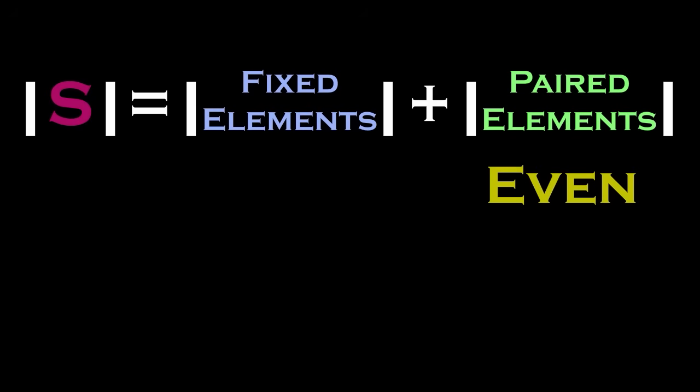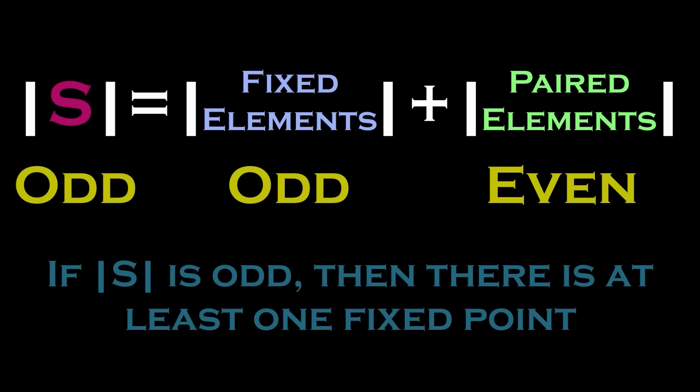Likewise, if the number of elements of s is odd, then the number of fixed points is odd, since an odd number plus an even number is an odd number. One really important point to emphasize here is that if s is odd, then there has to be at least one fixed point because the smallest positive odd number is 1, not 0.